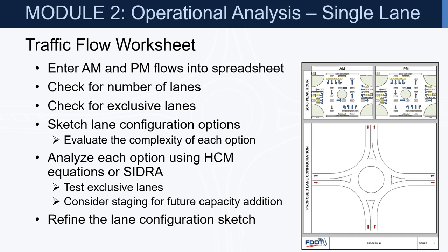Enter the AM and PM flows into the spreadsheet, check for number of lanes, check for exclusive lanes, sketch the lane configuration in the middle section, and evaluate the complexity of each option. AM may have different requirements than PM, so combine them to come up with one lane configuration that works for both — and make sure it is not more complex than necessary.